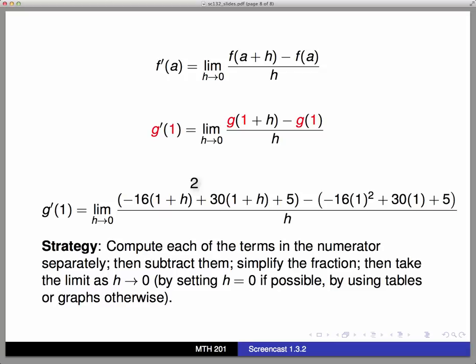We're going to go through and compute each of the terms in the numerator separately. There's two things being subtracted. I'm going to calculate those things and simplify them, then do the subtraction. And then that will leave me with a fraction with a simpler numerator, and I would like to simplify the entire fraction if possible.